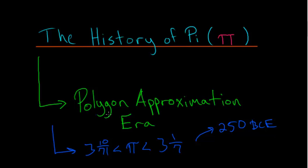This era, the Polygon Approximation Era, continued all the way into the 1600s CE. So the next person to use polygons to find the value of pi was Ptolemy.